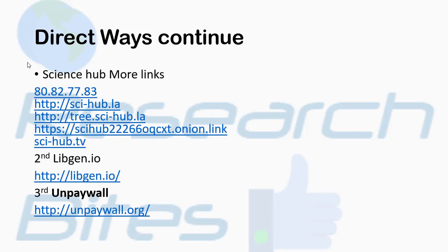The second direct method is Libgen.io, which is still working on the same link — there is only one link for Libgen. But in some countries you may have a problem: it is restricted and you cannot get access to this website directly. I will let you know how to deal with that.